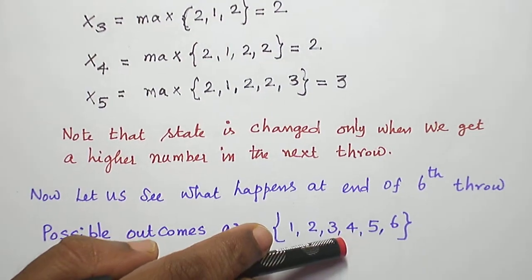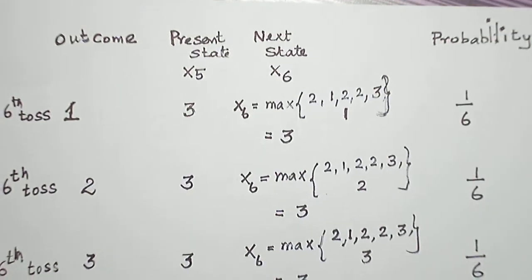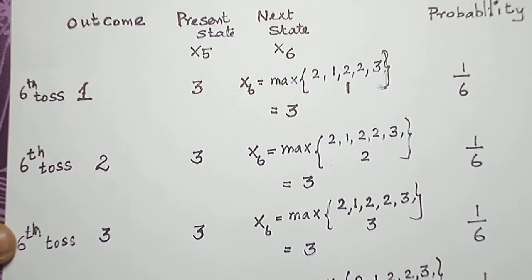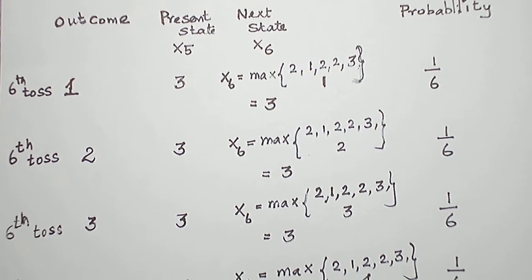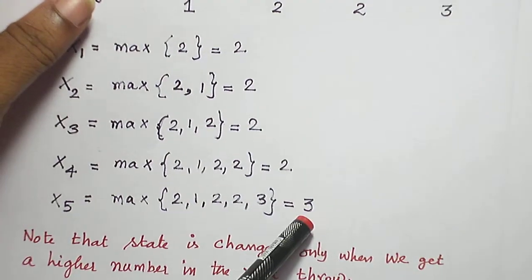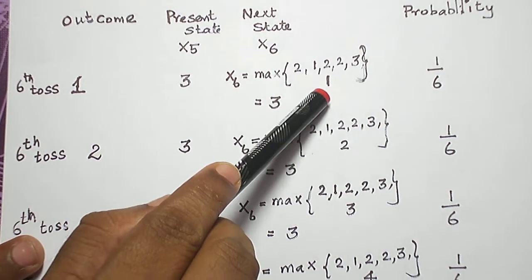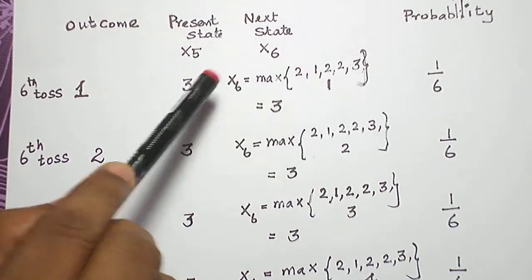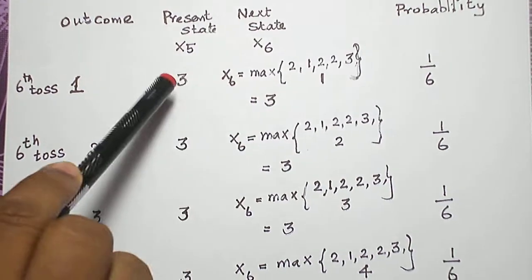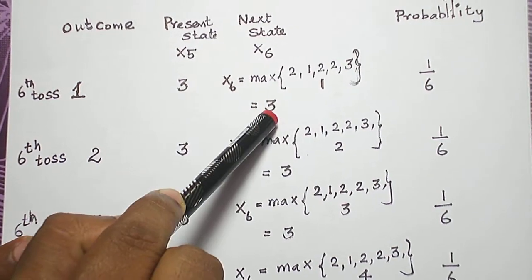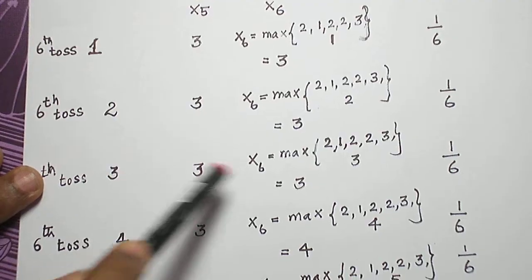6th toss possible outcomes are 1, 2, 3, 4, 5, 6. In all these 6 cases, the present state remains at state 3. So at the end of the 5th toss, maximum number is 3. Now, 6th toss, suppose I get number 1. 1 is included here. So when I include 1, I will get X6 equal to 3. Since the maximum number is 3, the same state is preserved. Probability of getting 1 is 1 by 6. Same thing happens for number 2 and 3 also.